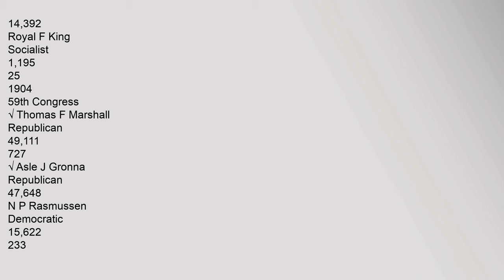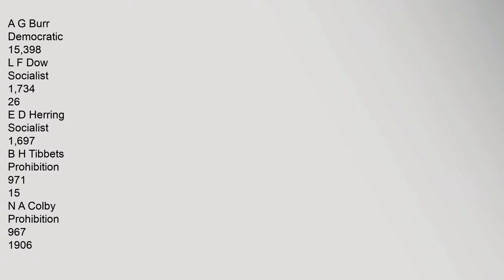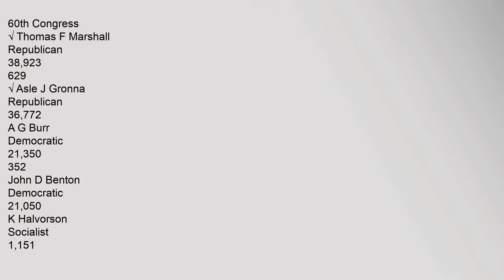1904 (59th Congress) — Thomas F. Marshall, Republican: 49,111 (72.7%); A.S.L.E.J. Grana, Republican: 47,648; N.P. Rasmussen, Democratic: 15,622 (23.3%); A.G. Burr, Democratic: 15,398; L.F. Dow, Socialist: 1,734; E.D. Herring, Socialist: 1,697; B.H. Tibbetts, Prohibition: 971; North A. Colby, Prohibition: 906.